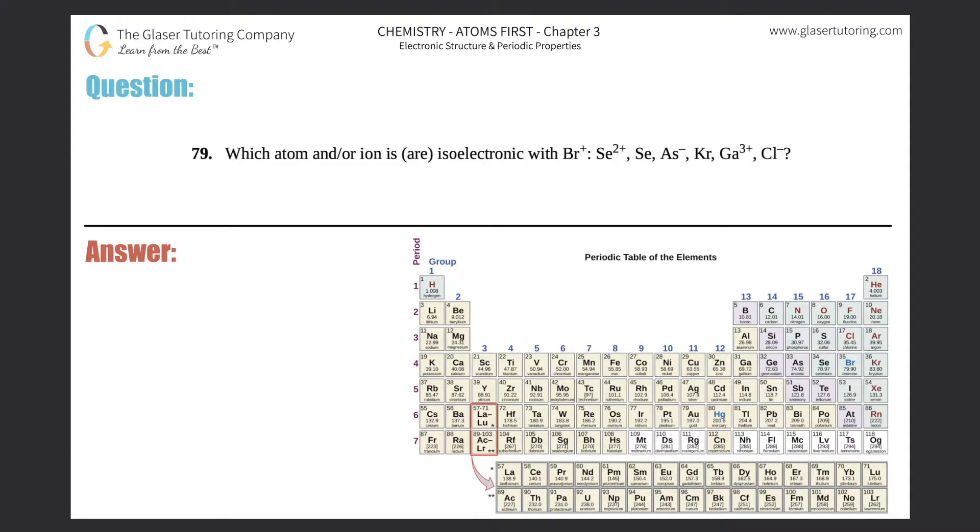Number 79: Which atom and/or ion is or are isoelectronic with Br+? Sc2+, Se, As-, Kr, Ga3+, or Cl-? Okay, so new word here: isoelectronic. What does that mean? If atoms or ions are isoelectronic with each other, that means they have the same...